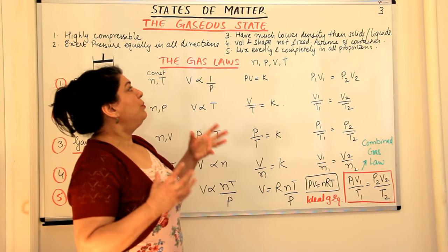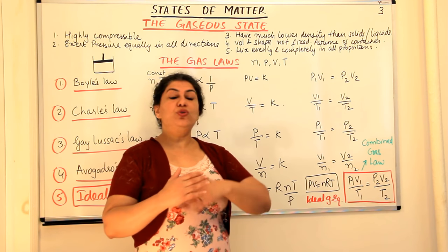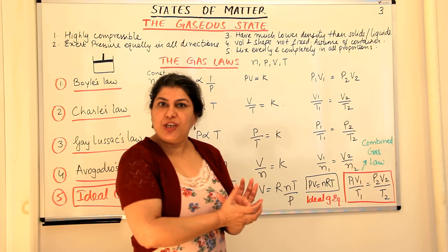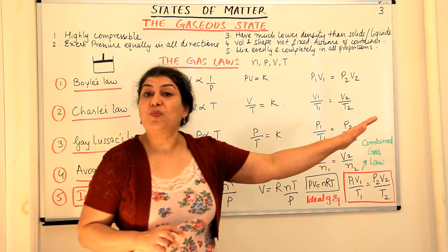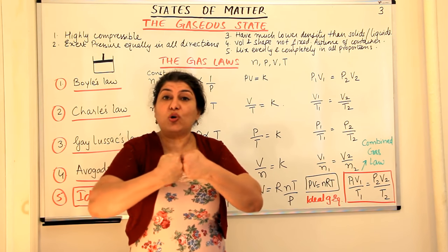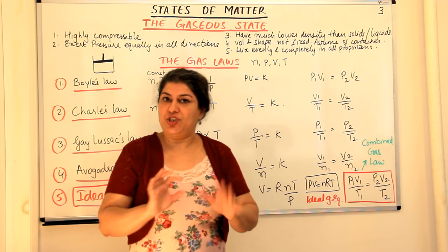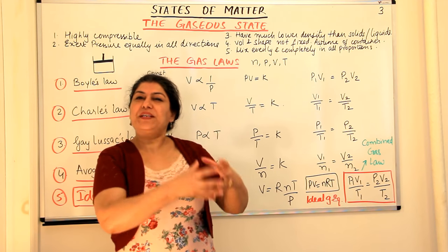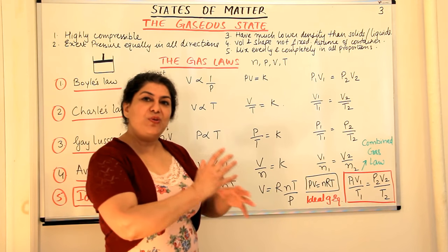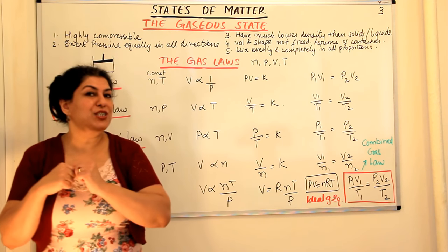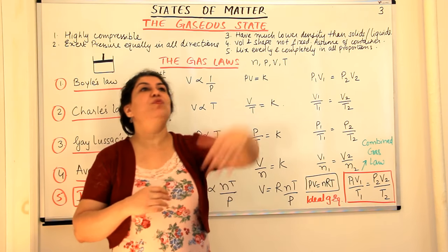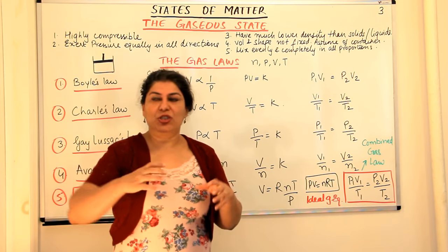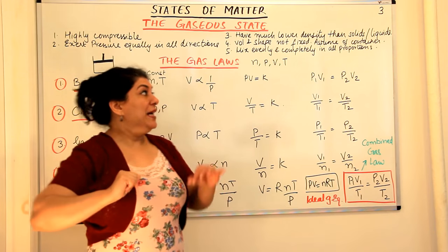The fourth property is that the volume and shape of gases is not fixed. When molecules are in constant random motion, you cannot expect them to sit at one place and have a particular shape. In solids, molecules are so closely packed they can only vibrate about their own position. In liquids, molecules can slip and slide a little, but the attraction is strong enough that they can't break free — they don't have a fixed shape but they have a fixed volume.